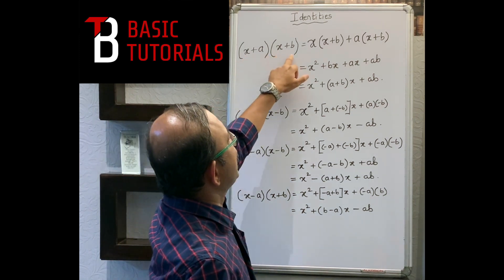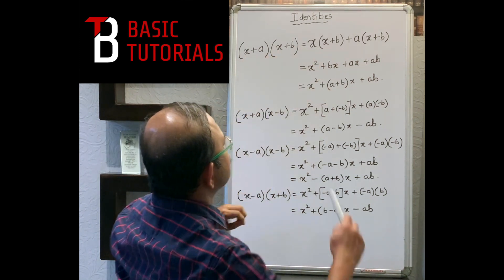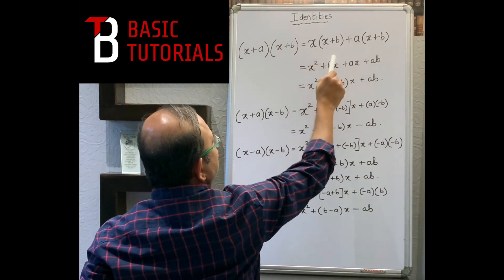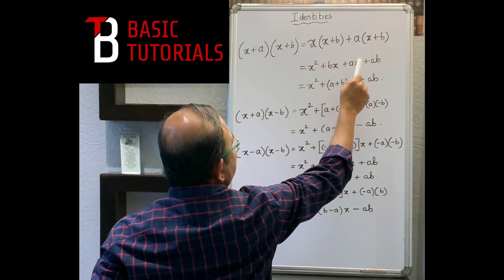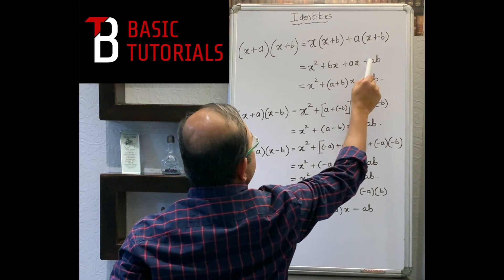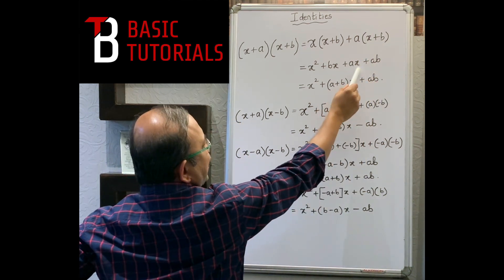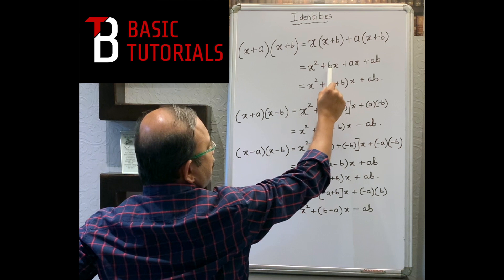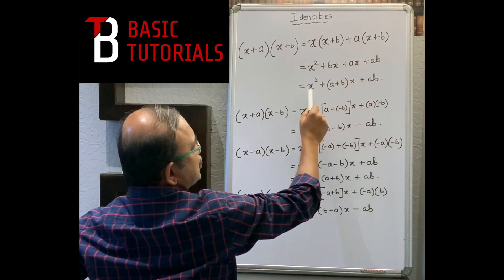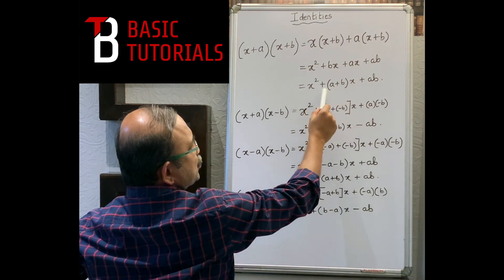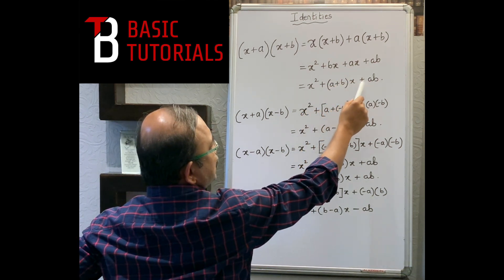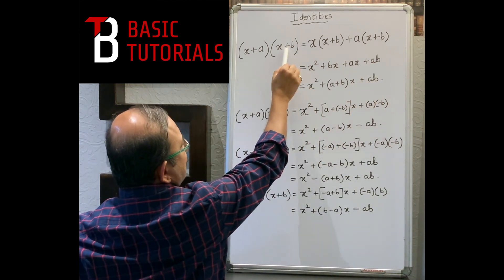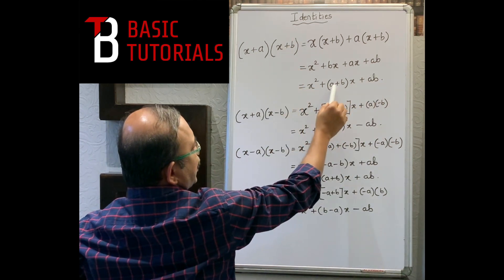For (x+a)(x+b): x×(x+b) + a×(x+b) gives x² + bx + ax + ab. Taking x common from the middle terms: x² + (a+b)x + ab. In short, with +a and +b we write x² + (a+b)x + ab.